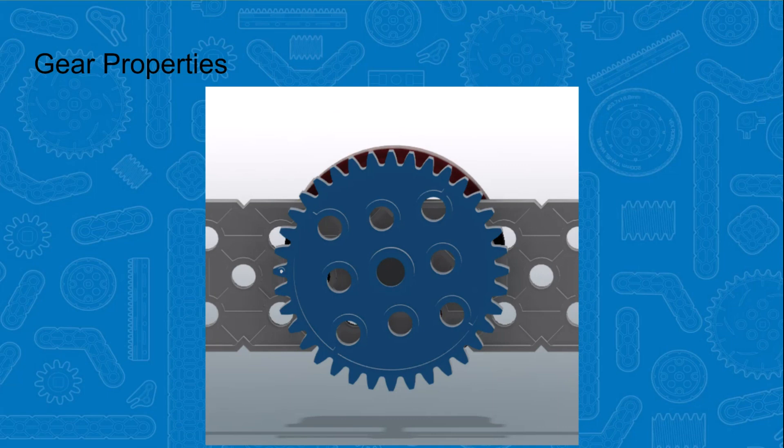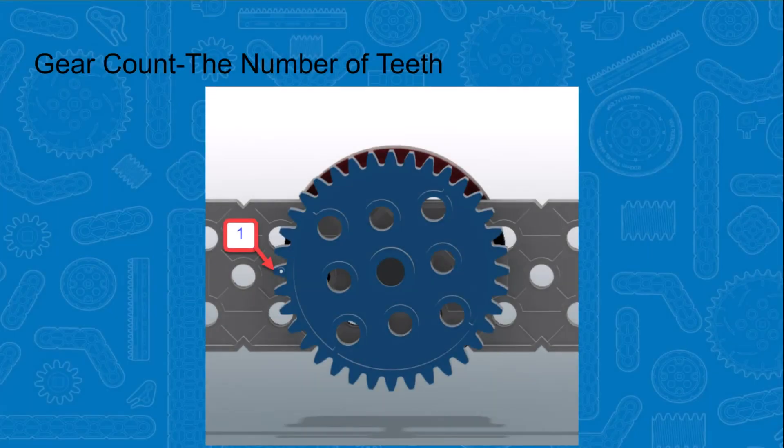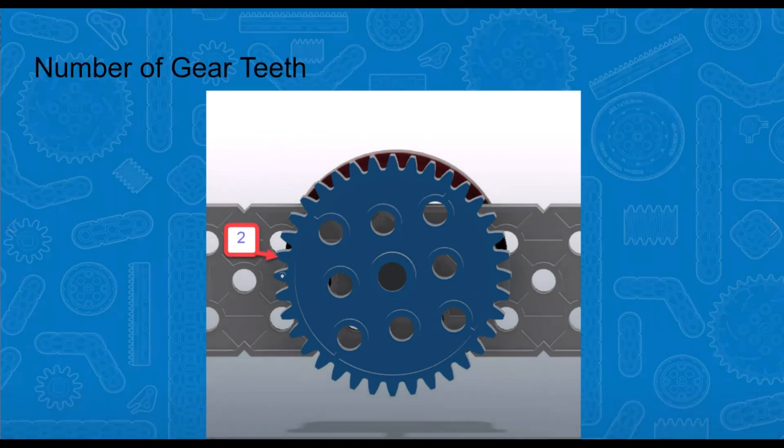Two important properties of this spur gear, that is what this type of gear is called, are gear count and gear pitch. Gear count is the number of teeth around the gear and can be simply found by counting out the teeth. As you can see, the gear count on this gear is 36.